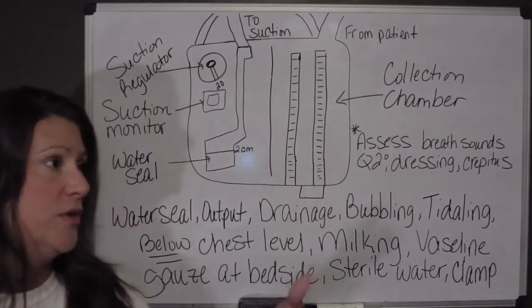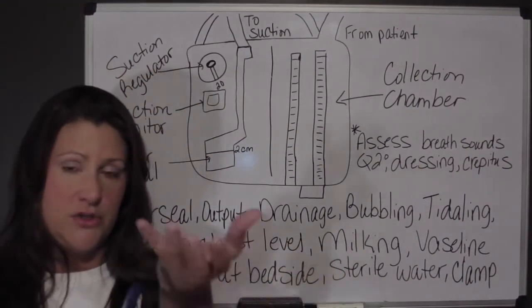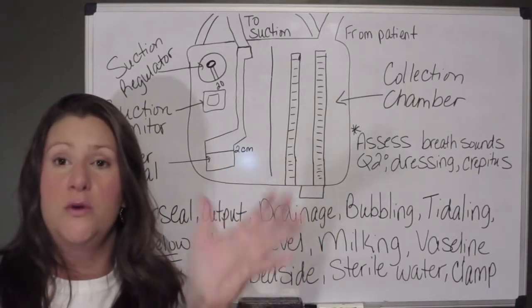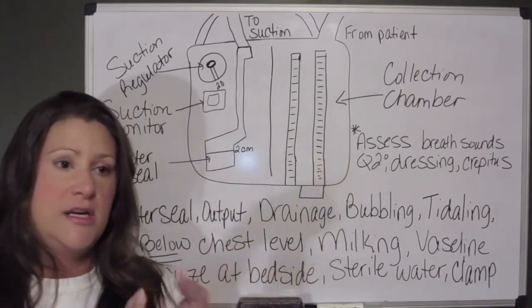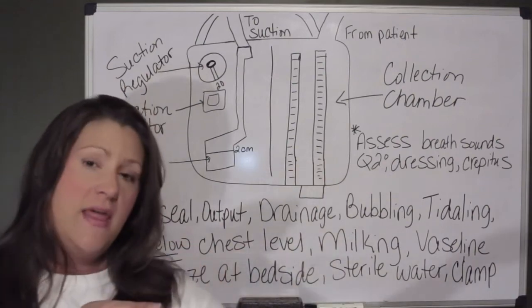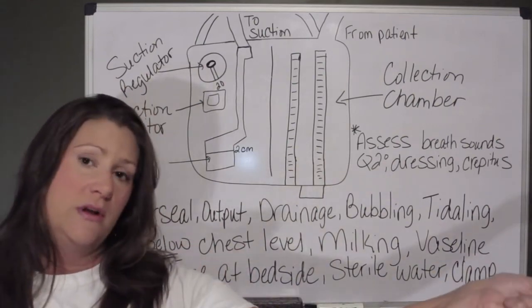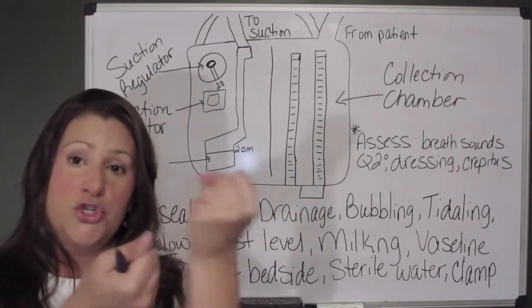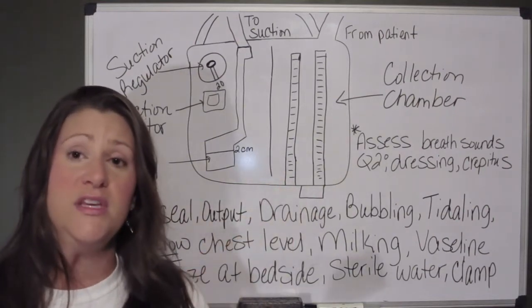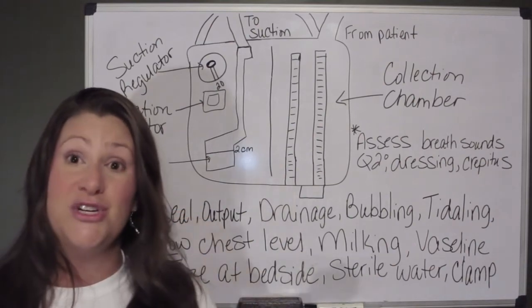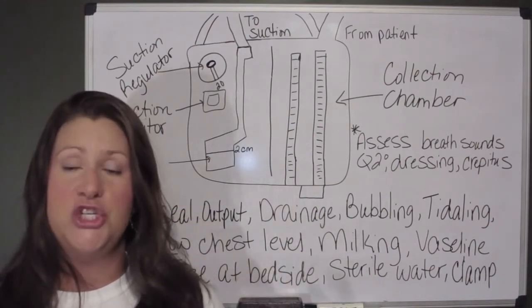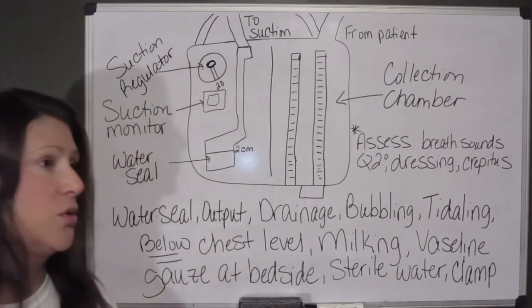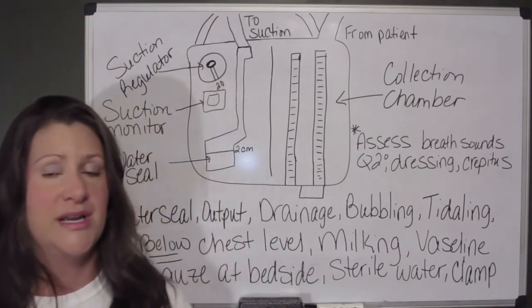Milking or stripping: you will sometimes see nurses doing that. Let's say there is drainage hanging in one of the dependent loops of the chest tube — you might see a nurse milking the chest tube to get it down into the collection chamber. Don't do that! When you milk or strip the chest tube, you will potentially create a tension pneumothorax in your patient. Do not milk or strip the chest tube under any circumstance.